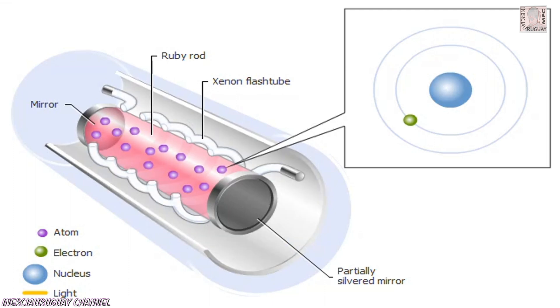Intense light from the flash tube excites electrons in the ruby's chromium atoms. The electrons are raised to higher energy levels.